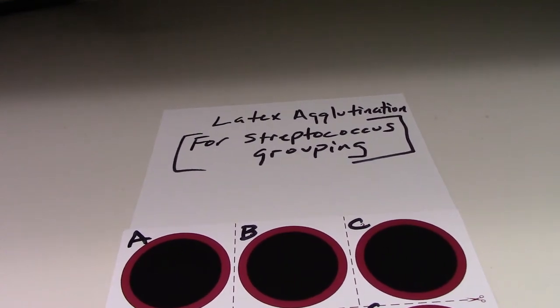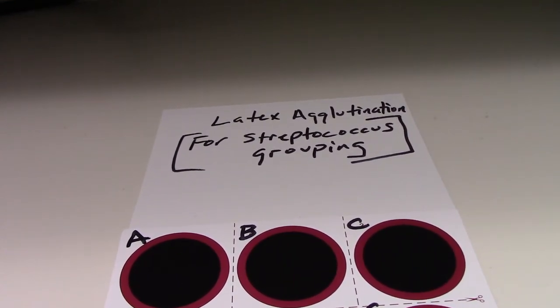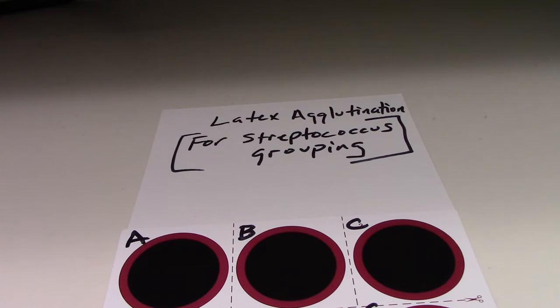The testing being performed is a latex agglutination for streptococcus group antigens. For those group antigens, we will be looking for whether it's streptococcus group A, group B, or C.